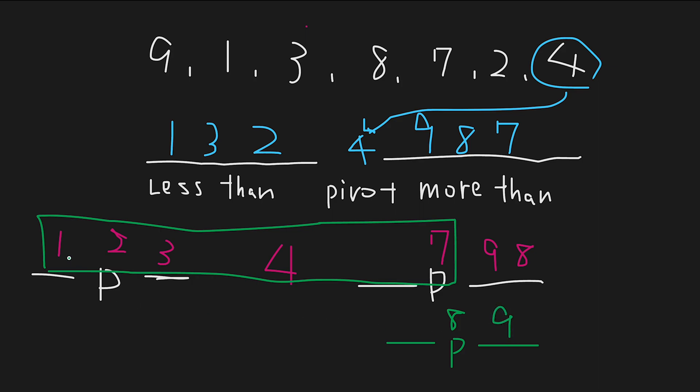In the end, we have 1, 2, 3, 4, 7, 8, 9. We successfully sorted the list. That is how quicksort works.